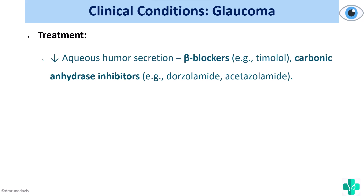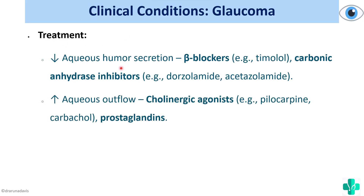To treat glaucoma, we can either decrease aqueous humor production by giving beta-blockers like timolol or carbonic anhydrase inhibitors, or we can increase aqueous outflow by giving cholinergic agonists like pilocarpine as well as prostaglandins.